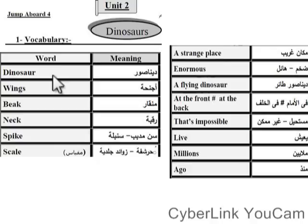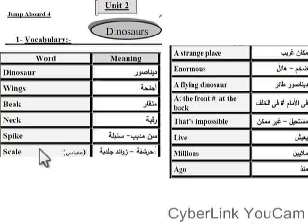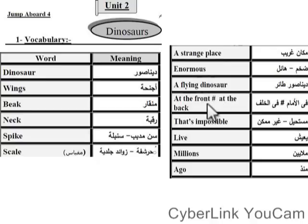Dinosaur. Wings. Beak. Neck. Spike. Scale. A strange place. In rooms. A flying dinosaur. At the front, at the back. That's impossible.